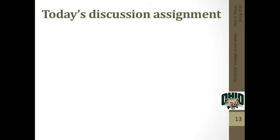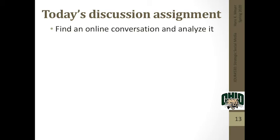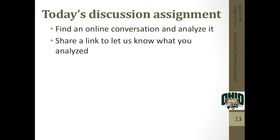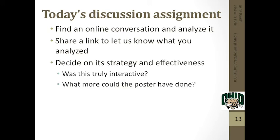For our discussion assignment, posted on the discussion board, I want you to find some kind of online conversation that fits the rules we just talked about and analyze it. Make sure you share a link to what you found. These conversations can be anywhere — on Twitter, Facebook, Instagram, or Reddit. Reddit is a great place for interactivity because people aren't only responding to what's there, but also talking about previous interactions they've had with posters. Then in one paragraph, decide on its strategy and effectiveness — was this truly interactive? What more could the poster have done?